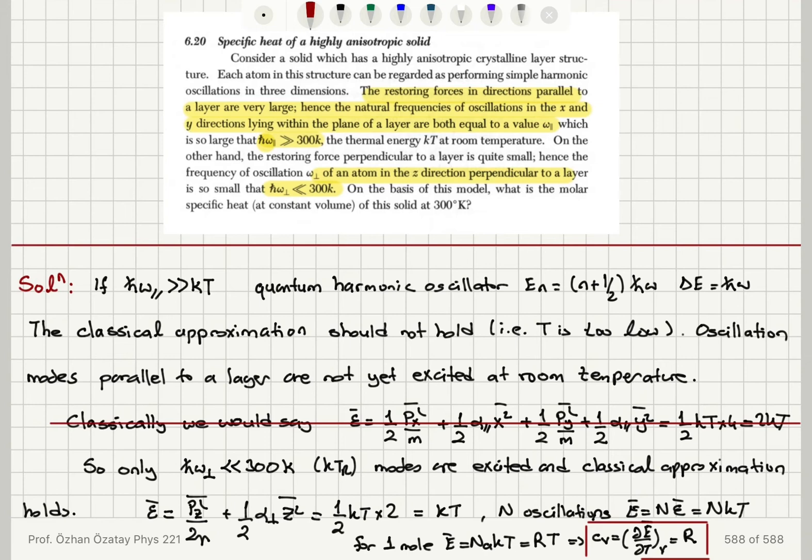So this is an interesting question. We have a highly anisotropic solid. Anisotropic means the properties of the solid depend on the direction. And we have a behavior which depends on if we are looking at parallel to a layer or perpendicular to a layer. So if we are parallel to a layer, the oscillation frequencies are so high because the restoring forces are too large. So maybe the alpha parallel is too large, the bonds are too strong.